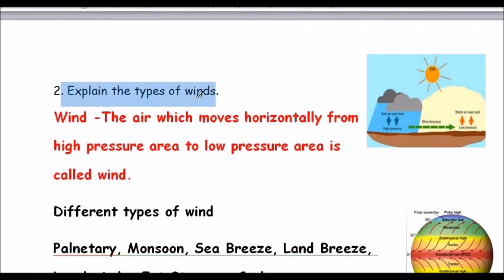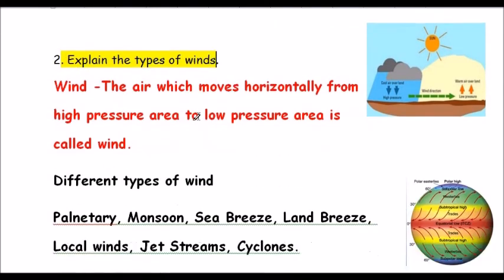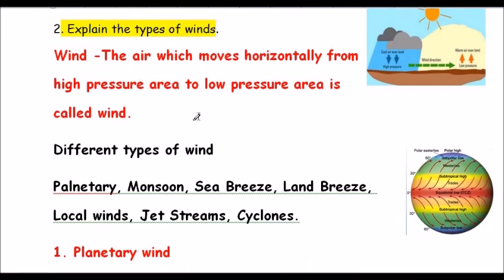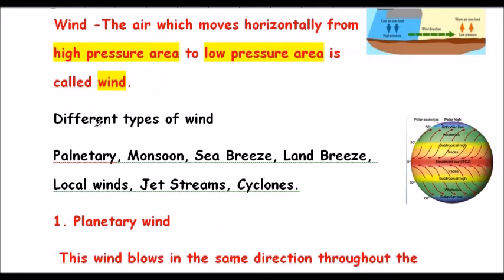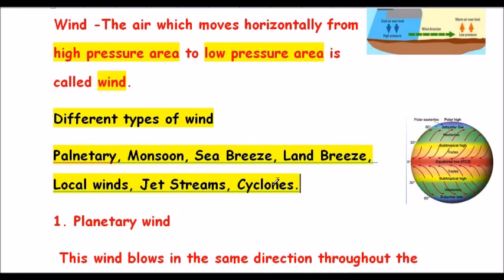Question two: Explain the types of winds. Wind is the air which moves horizontally from a high pressure area to a low pressure area. Different types of winds are planetary wind, monsoon wind, sea breeze, land breeze, local wind, jet stream, and cyclone.